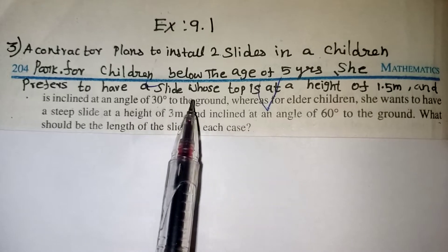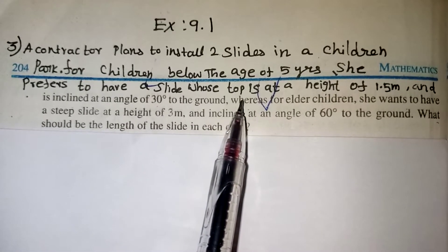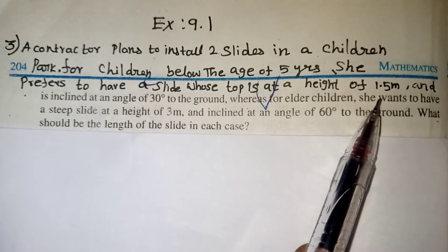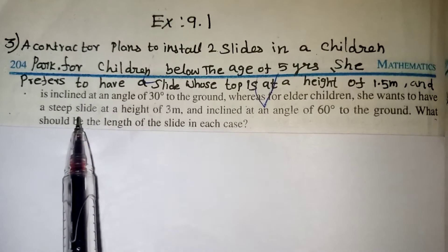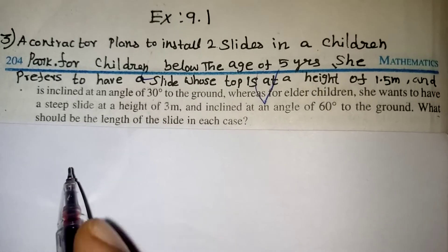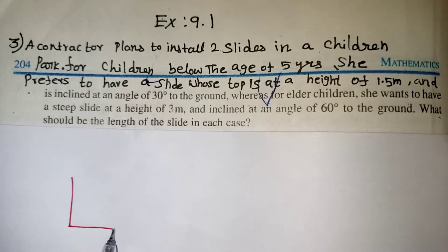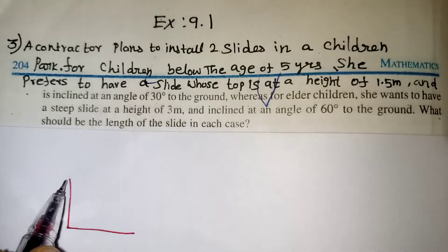For children below the age of 5 years, she prefers to have a slide whose top is at the height of 1.5 meter. And the inclined angle is 30 degree to the ground. So they are going to make two slides.